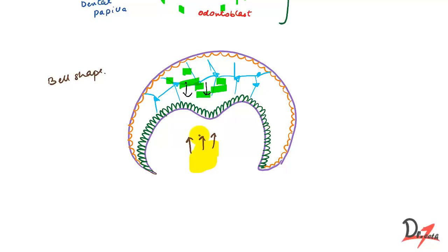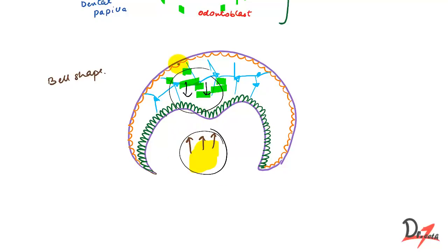Crown shape is determined by the differential rates of mitosis and differences in cell differentiation timing. The cells in the enamel organ do not all divide at the same time — they have different rates of growth and differentiation, which is already programmed into them. That determines the crown shape, not the mechanical forces from the dental papilla or stellate reticulum.